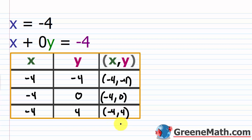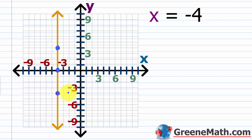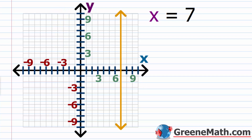Let's go to the coordinate plane. Here's the graph of x equals negative 4. We found ordered pairs: (−4, −4) is 4 units to the left and 4 units down; (−4, 0) is just 4 units to the left; and (−4, 4) is 4 units left and 4 units up. No matter what I choose for y, x is always just negative 4. The quick way to graph this is to go to negative 4 on the x-axis and sketch a vertical line. Similarly for x equals 7, just find 7 on the x-axis and draw a vertical line.